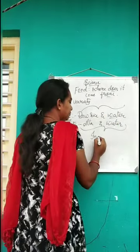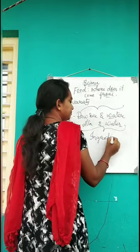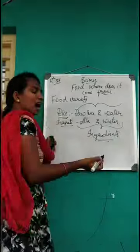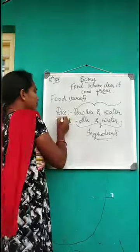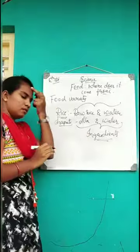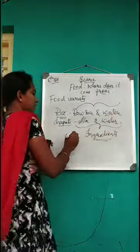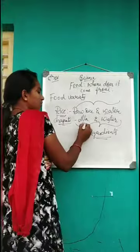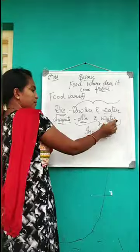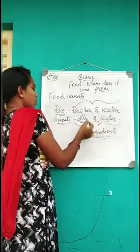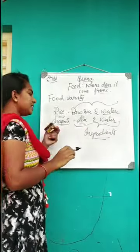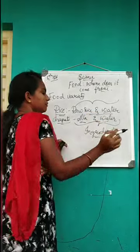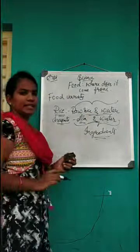These are the ingredients. What are ingredients? The items which we use for cooking. For rice, we use raw rice and water. For chapati, we use aata and water. Aata means wheat flour, and water means paani. So we use these two items to cook chapati. Like that, we use different items for different foods — those are called ingredients.